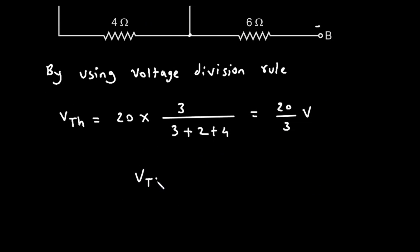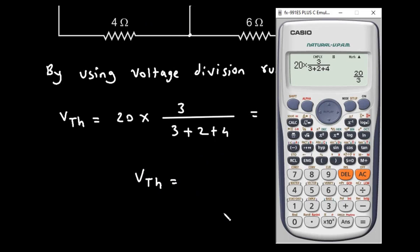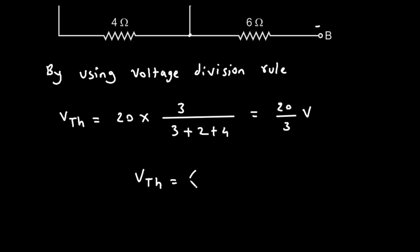So here we can write VTH is equal to 20 by 3, or we can say it is 6.667 volt. This is the value for VTH.